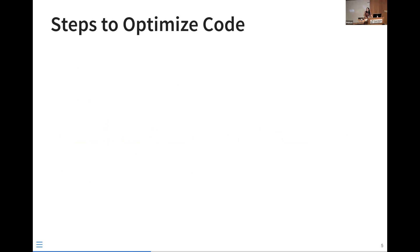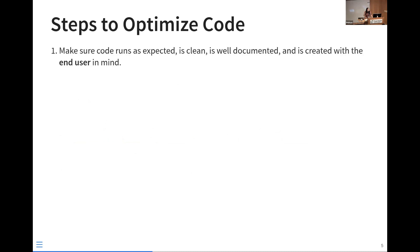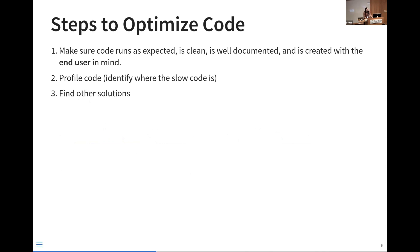So let's say you do need to optimize your code — what are the steps? First, follow the pre-optimization steps and write the code with the end user in mind. Next, you should profile your code — this is where you identify any bottlenecks that are actually making your code slow. The next step is to find other solutions, such as vectorizing your code. R is built off of vectors, and if you use vectorized expressions instead of loops, your code will run much faster.